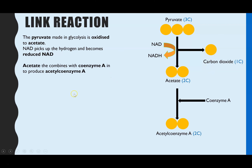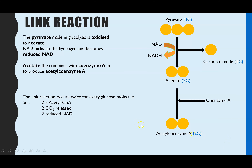The last stage in the link reaction is how acetate is converted into acetyl coenzyme A. That's simply by acetate combining with a coenzyme called coenzyme A. The purpose of this step is so that acetyl coenzyme A can enter the next stage, which is the Krebs cycle.